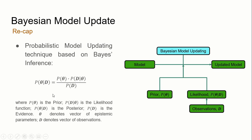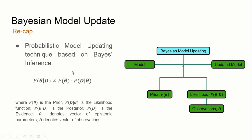The evidence gives you the updated knowledge of the unknown parameters given the observed data. More often than not, this evidence — the normalization constant — may not be straightforward to compute. As such, the posterior is usually represented in a proportionality relation and is usually unnormalized. The main ingredients required are the prior and the likelihood.